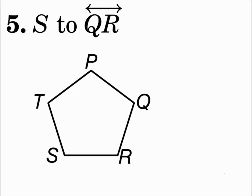Number 5: From point S to line QR. You can't draw this one inside because it won't make a right angle, so extend line QR. Then draw straight from point S to line QR and hit it at a right angle. Remember, it has to be a right angle — if you can't do it inside the shape, then extend the line until you can.